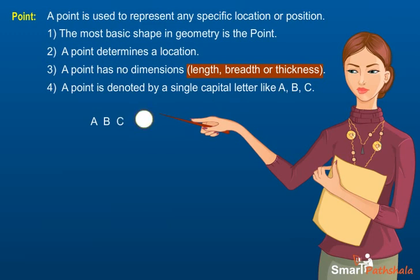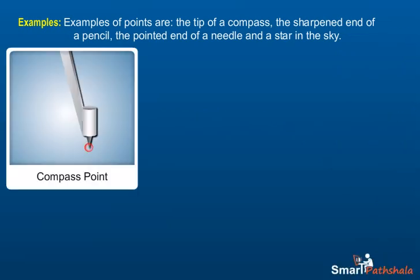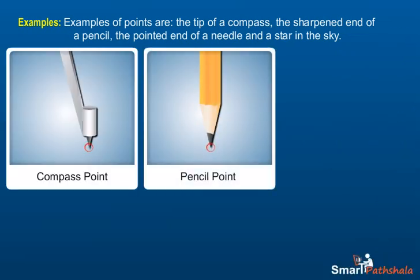Five, examples of points are: the tip of a compass, the sharpened end of a pencil, the pointed end of a needle, and a star in the sky.